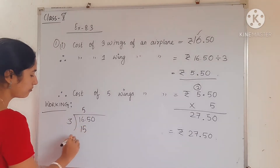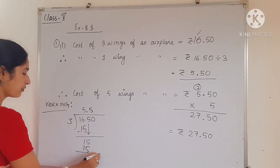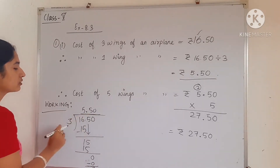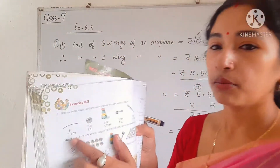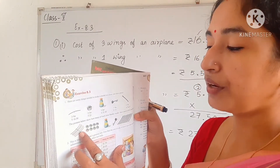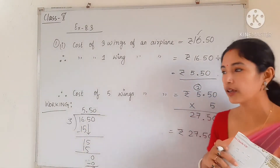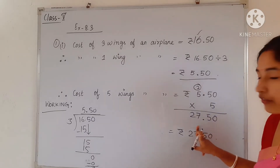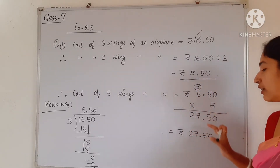You have to show the division working in your fair copy. From the figure, counting the wings: 1, 2, 3, 4, 5 — there are 5 wings total. We already found the cost of 1 wing, so by multiplying rupees 5.50 by 5 we get rupees 27.50. If you have difficulty with the multiplication, you can ask me in the next room class.